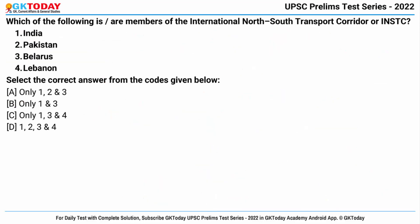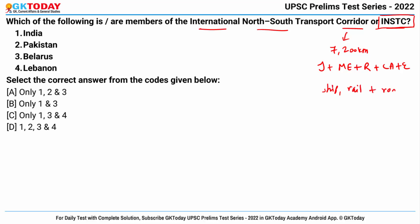Question number two: which of the following are members of the International North-South Transport Corridor, or INSTC? This is a 7,200-kilometer-long multimodal transport network connecting India, the Middle East, Russia, Central Asia and Europe by ship, rail and road for moving freight. It enhances accessibility to landlocked Central Asian nations. The member countries include India, Iran, Russia, Turkey, Azerbaijan, Kazakhstan, Armenia, Belarus, Tajikistan, Kyrgyzstan, Oman, Ukraine and Syria.